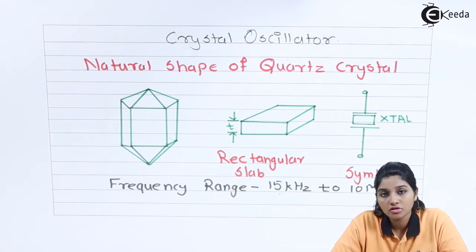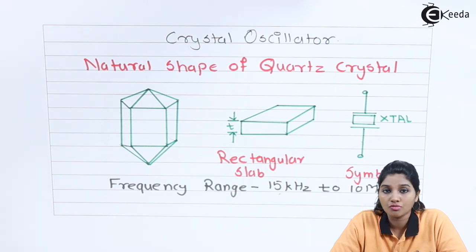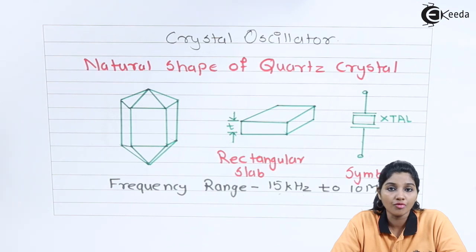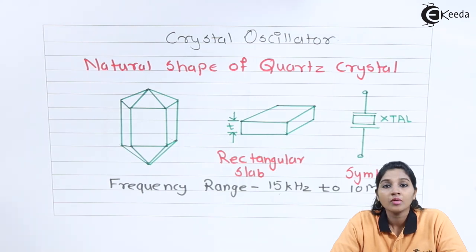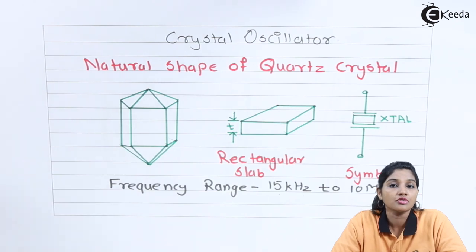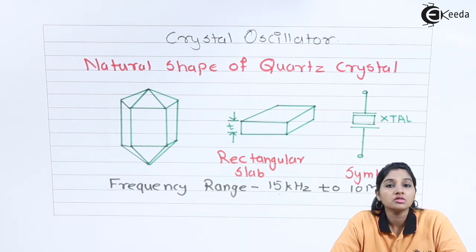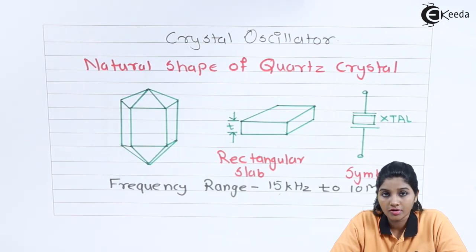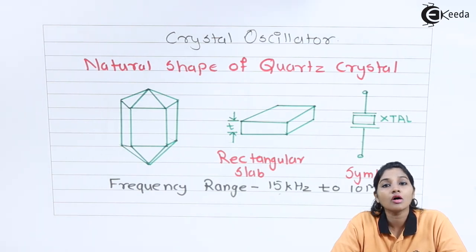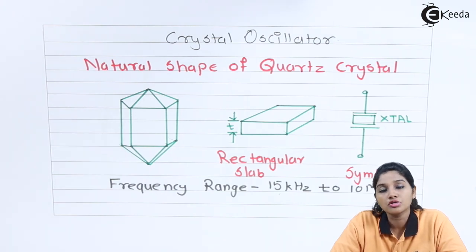The materials used for the construction of crystal oscillators are quartz crystal, Rochelle salt, and Tourmaline. The most common material is quartz crystal because it has properties of both and is inexpensive. It also exhibits the piezoelectric effect — when AC input voltage is applied across the crystal, it produces output vibrations, and when mechanical vibrations are applied, it produces an AC signal at the output. This is also called the transducer and inverse transducer effect, or piezoelectric effect.